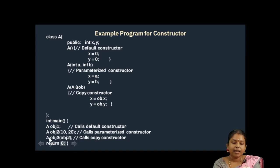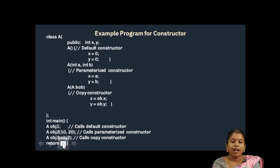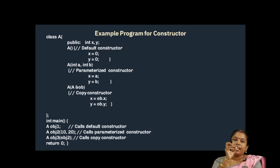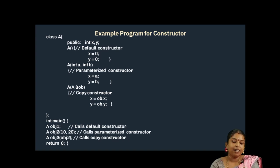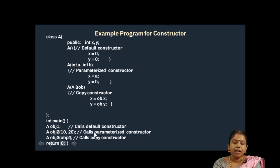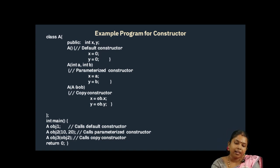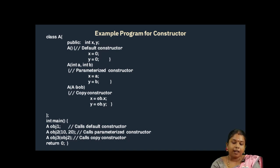During the creation of OBJ3, it passes OBJ2 as an argument to the Constructor. The value of X will be initialized with the value of X from the previous object OBJ2. So the value of X will be 10 and the value of Y will be 20, initialized by using this Copy Constructor.